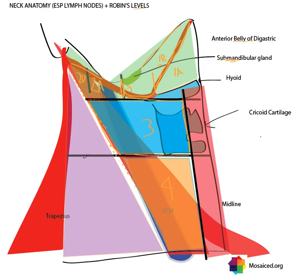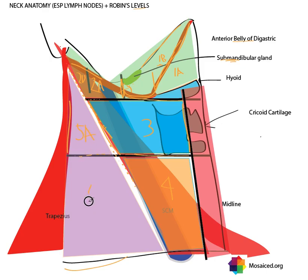Robbins level five is the posterior triangle of the neck, bounded by the trapezius, the sternocleidomastoid, and the clavicle. It can be divided again by the same line of the inferior border of the cricoid cartilage into level 5A and level 5B.